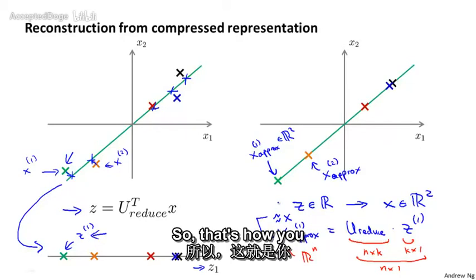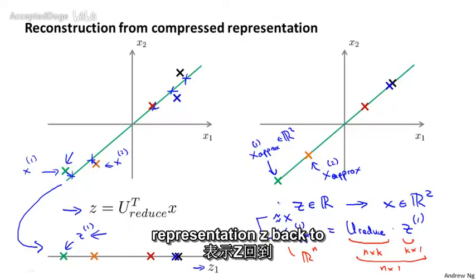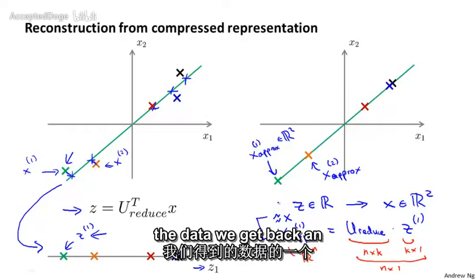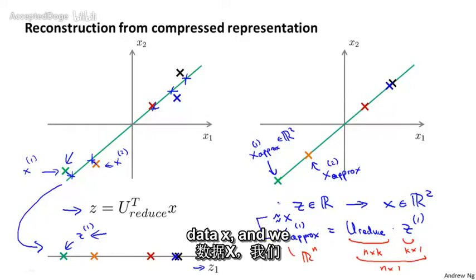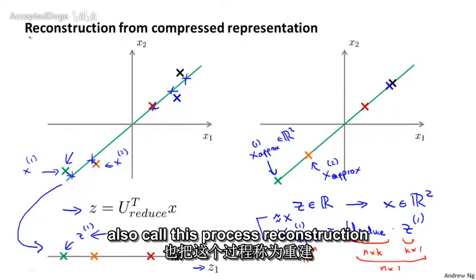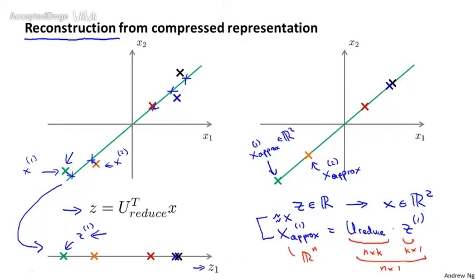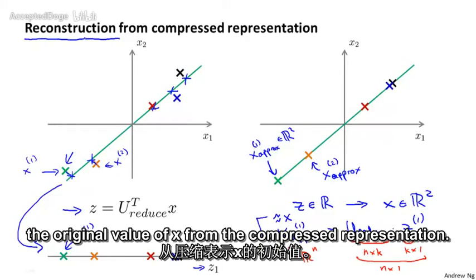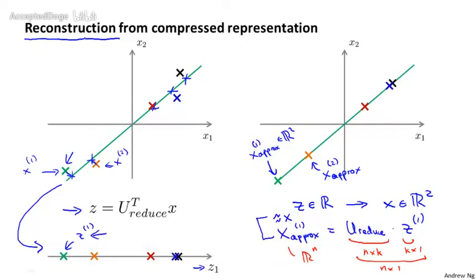That's how you go back from your low-dimensional representation z back to an uncompressed representation of the data. We get back an approximation to your original data x. We also call this process reconstruction of the original data, when we think of trying to reconstruct the original value of x from the compressed representation.